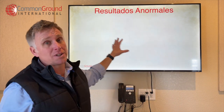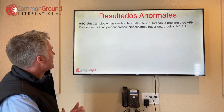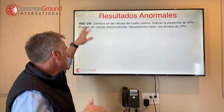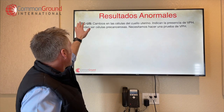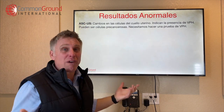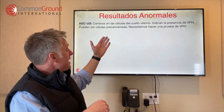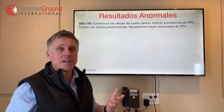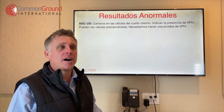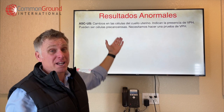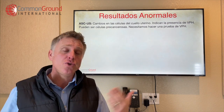Talking through the specifics of resultados anormales — there's some complex vocabulary here. So we're talking about atypical squamous cells. Cambios en las células del cuello uterino — changes in the cervical cells — indican la presencia de VPH, they kind of indicate the presence of HPV. Pueden ser células precancerosas — they could be precancerous cells. Necesitamos hacer una prueba de VPH — we need to do an HPV test.